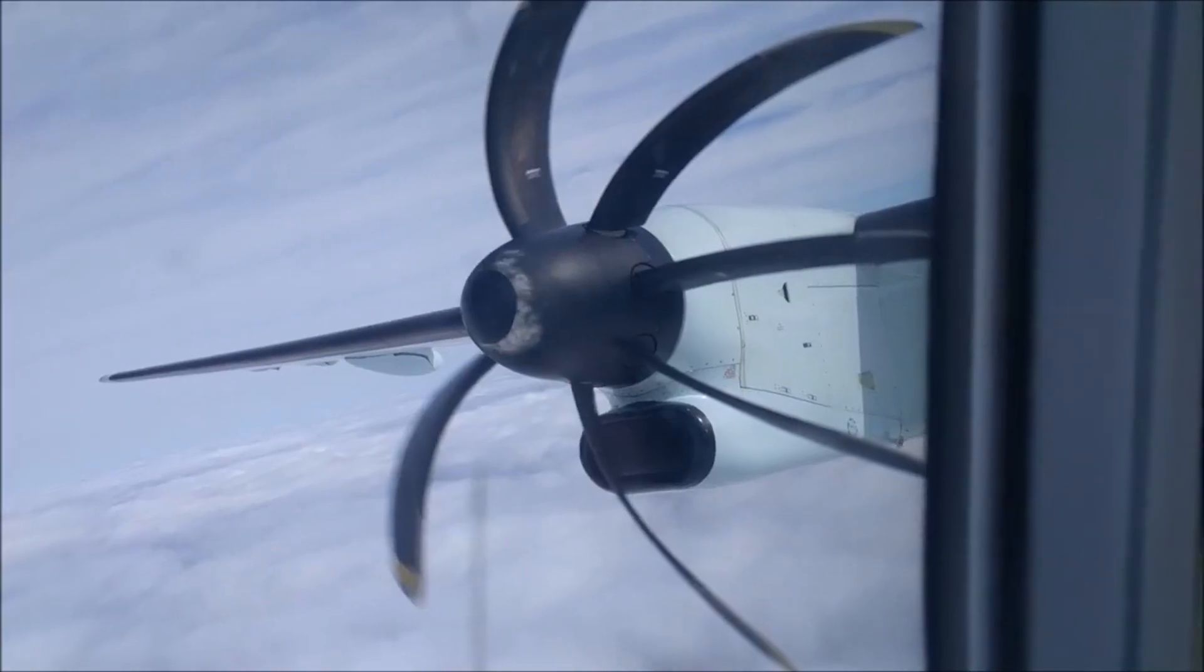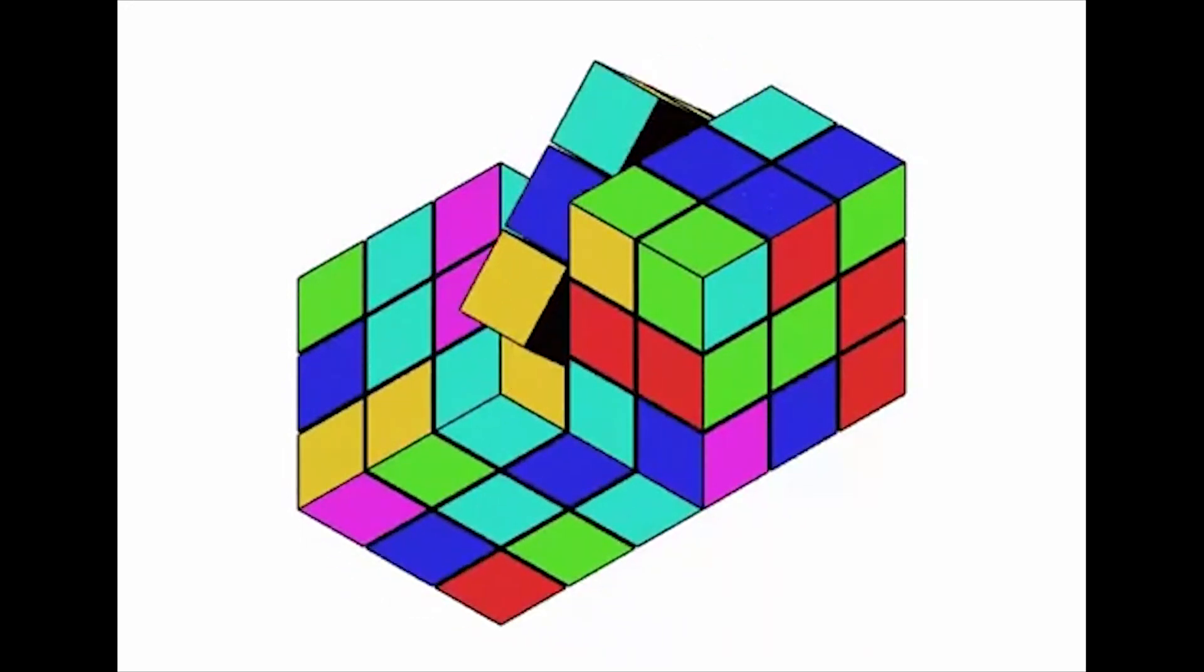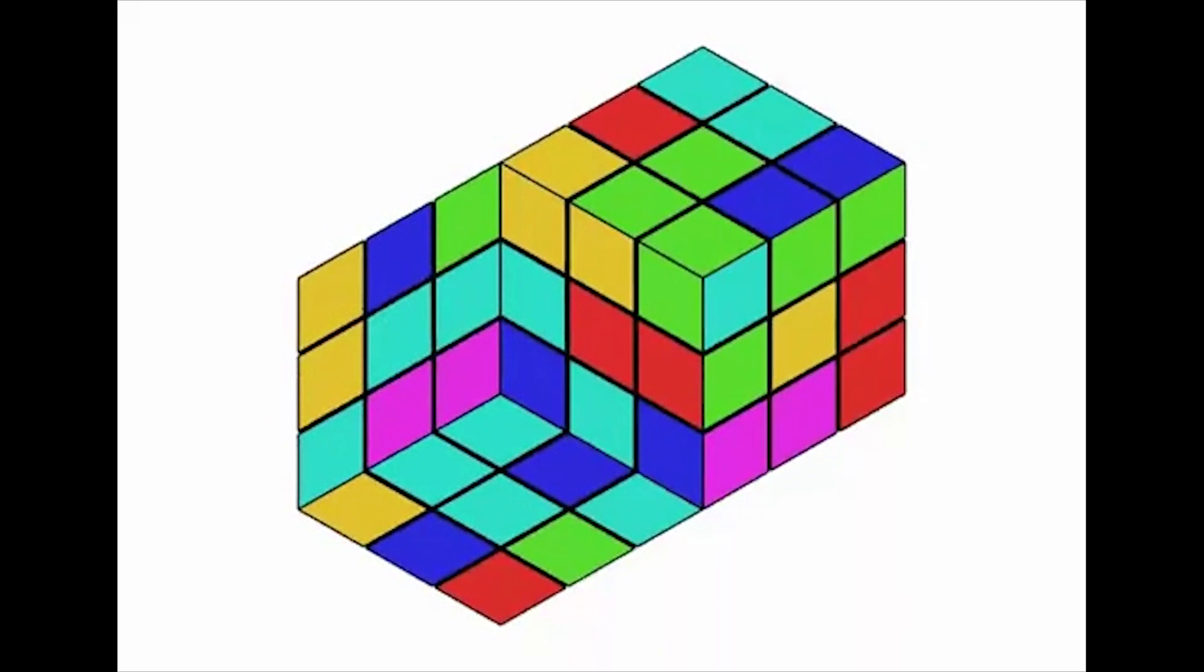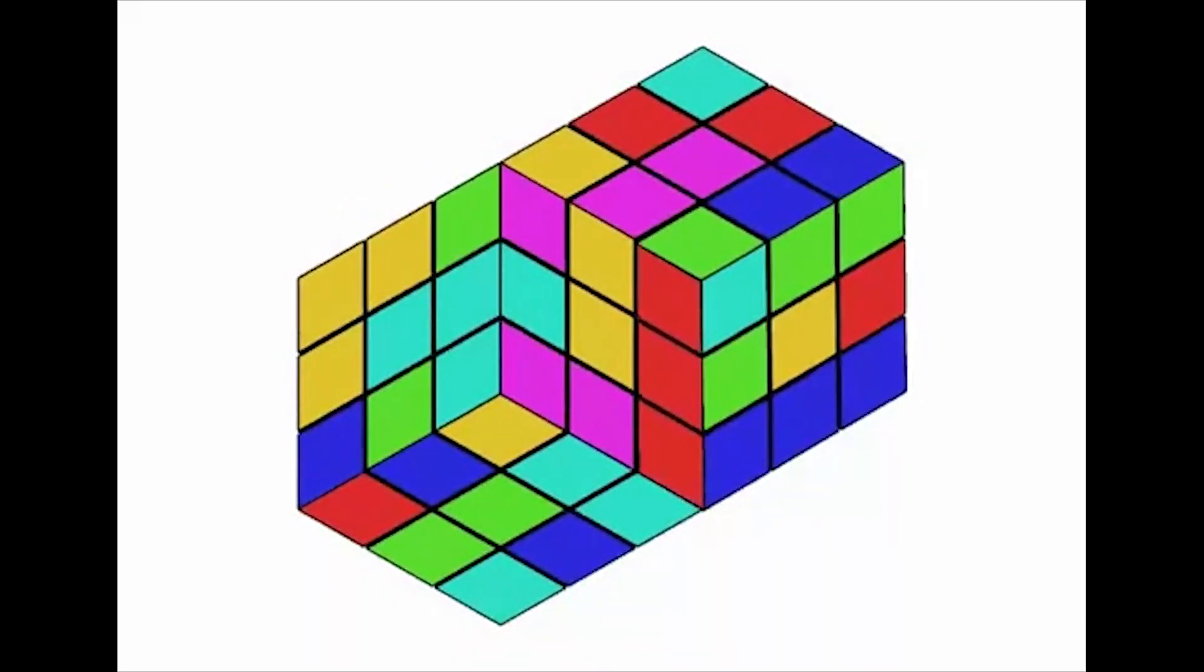The Rubik's Cube illusion—this classic optical illusion is based on the famous Rubik's Cube puzzle. As you stare at the cube, it appears to move and change color, but in reality it's just a static image.